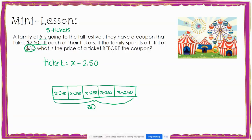Now I am going to use this to make an equation. From my tape diagram, I notice that I have five sections with the same value. I can show this in an equation by multiplying five by the cost of each ticket, which is x minus $2.50, and setting that equal to a total of $30.